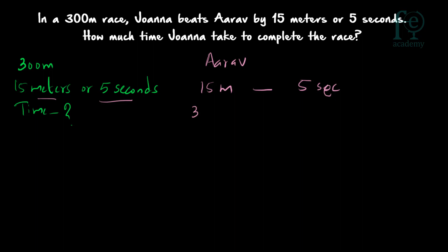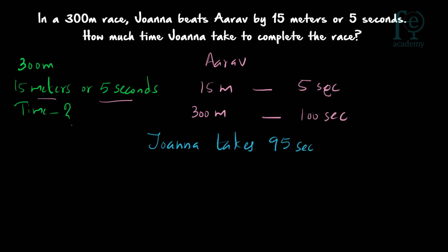So how much time will Adav take for 300 meters? 15 multiplied by 20 gives 300, so 20 into 5 is equal to 100 seconds. Adav will be taking 100 seconds to complete the entire race. So how much time will Joanna take? Joanna will be taking 5 seconds less since she is beating Adav by 5 seconds. So Joanna takes 100 minus 5, which is 95 seconds to complete the race.